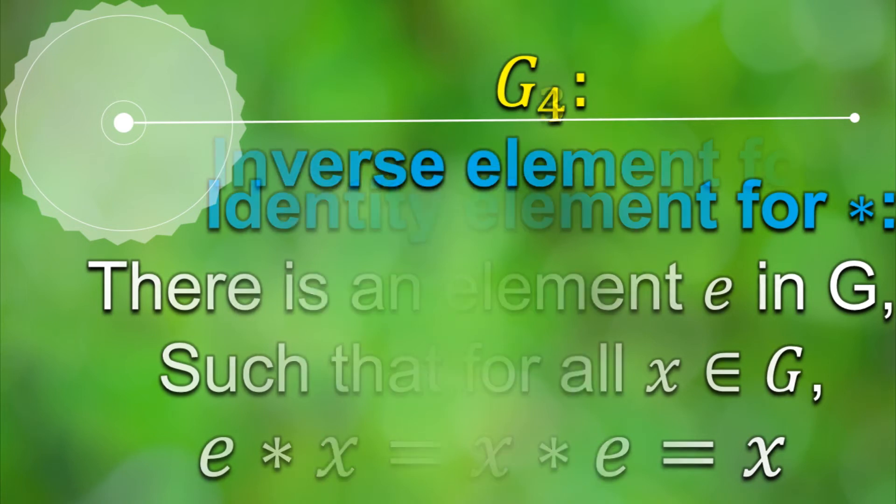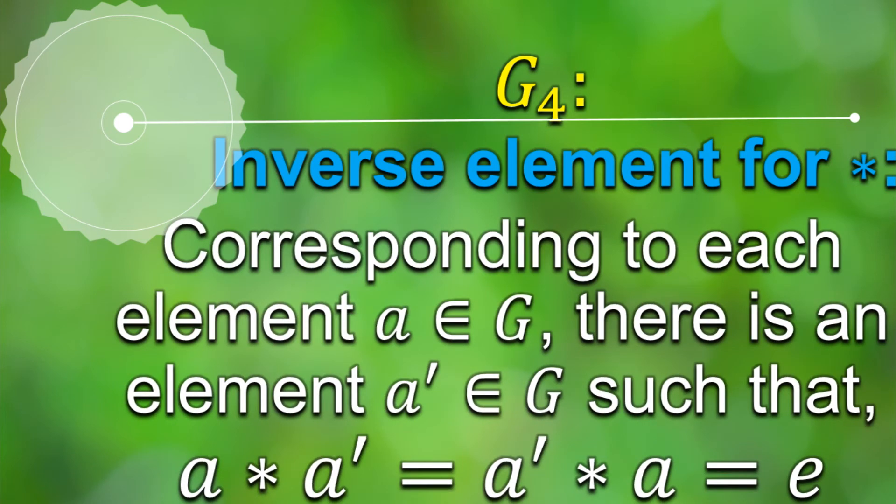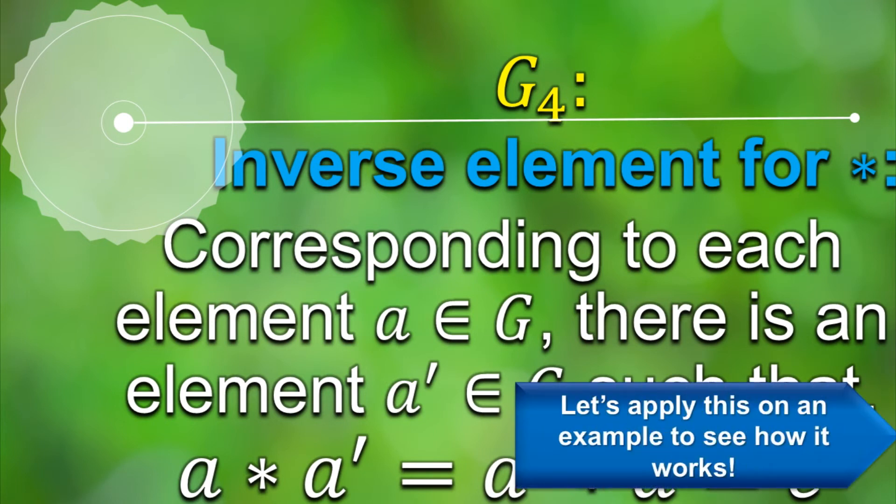Speaking of inverses, the fourth axiom of a group is having the inverse of each and every single element of the set. Now let's move towards the interesting part of this video which is solving an example.